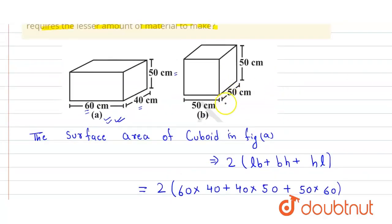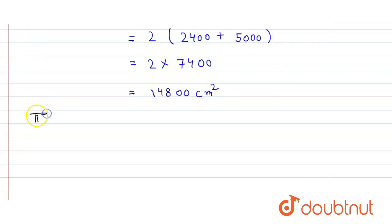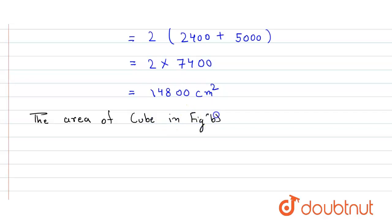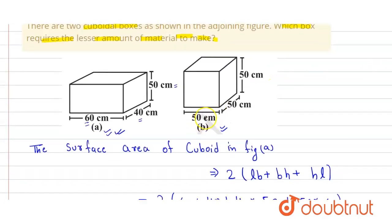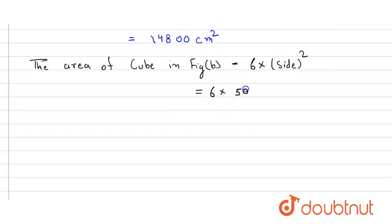Now we find the area of the cube given in figure B. The total surface area of a cube is 6 into side squared. Here all sides are equal because it's a cube, and the side is 50 centimeter. So it will be 6 into 50 squared, which is 6 into 50 into 50, equals 6 into 2500.